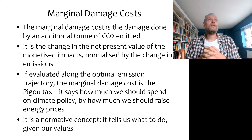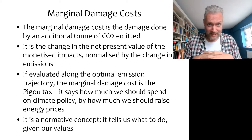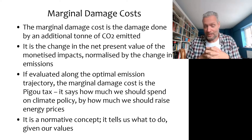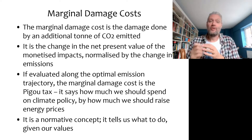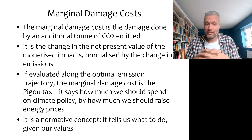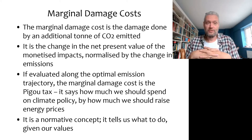If you do this along an optimal emissions trajectory, then you have calculated the BIGOO tax — the tax that you would want to impose on CO2 and other greenhouse gas emissions if your aim is to maximize welfare. The BIGOO tax and social cost of carbon is very much a normative concept; it tells us what to do.